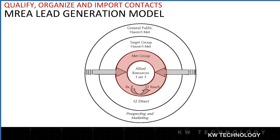If we want to target a farm area, what are some ways we could market to them? Steve mentioned door-knocking, which is exactly right, and passing flyers is another. These people are not even a lead yet — they're just a targeted group of have-not-mets. We know who they are, we know we want to bring them into our sphere, but we don't have their contact information yet. We can create a single marketing piece that speaks to everybody in that farm with a single message.